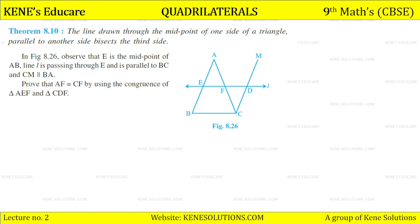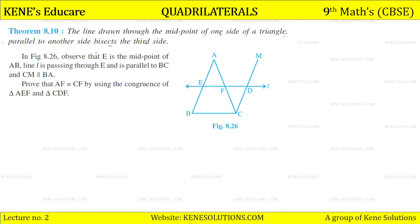The line drawn through the midpoint of one side of a triangle, parallel to another side, bisects the third side. Observe that E is the midpoint of AB. Line L is passing through E and parallel to BC, and CM is parallel to BA. So AF is equal to CF. We can prove this by using the congruence of triangle AEF and triangle CDE.